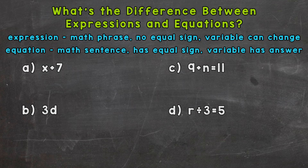On the other hand, equations are the full math sentence. They have an equal sign and the variable has a defined or set answer. Let's look at some examples in order to make sense of that.